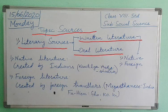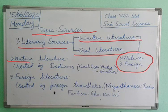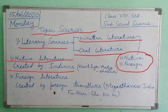There are two types of written literature. First, it is native literature, and second, it is foreign literature. The literature created by Indians in their native language is called native literature. Native language means the language of the place where they are living — it may be Kannada, Telugu, Hindi, or Marathi. It is considered as native.